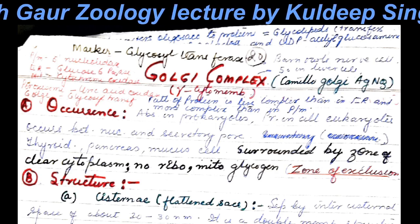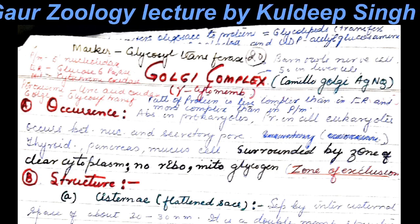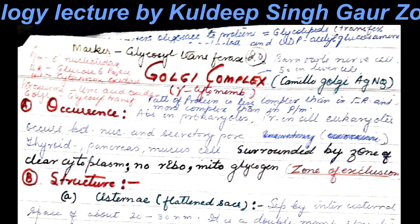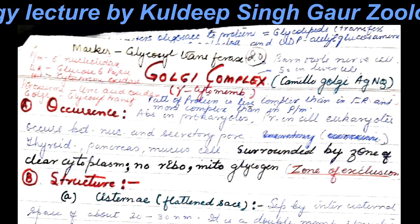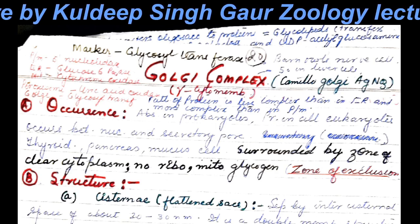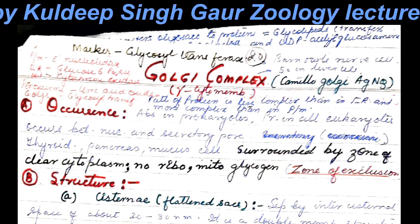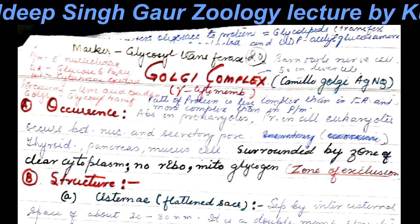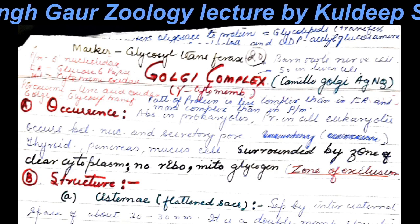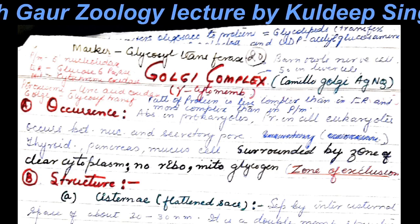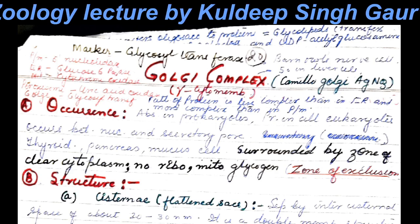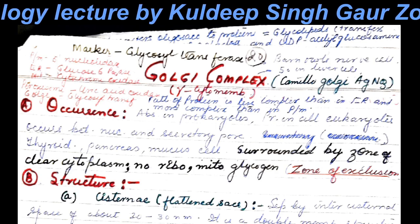The marker enzyme of Golgi membrane is glycosyl transferase, that of endoplasmic reticulum is glucose-6-phosphatase, that of plasma membrane is 5-nucleotidase, and in peroxisomes you come across uric acid oxidase.